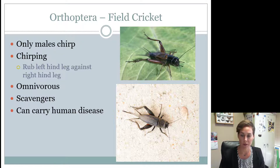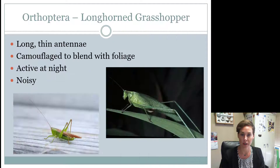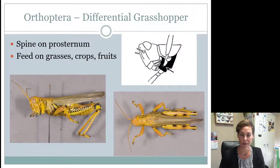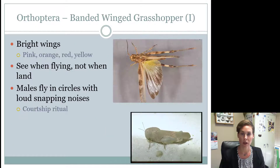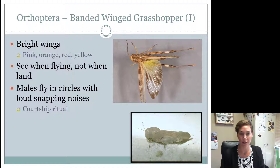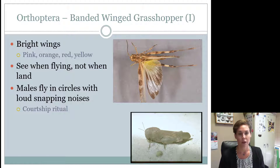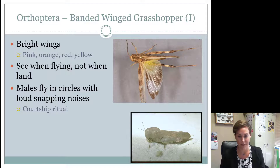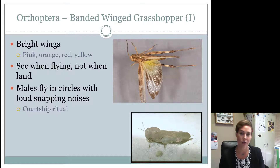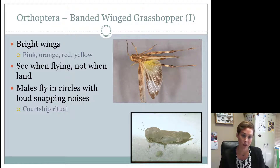Those are the three Orthoptera that juniors need to know: field cricket, longhorn grasshopper, and differential grasshopper. Juniors can stop here. If you're an intermediate or senior, you need to know three additional ones, starting with the banded winged grasshopper.